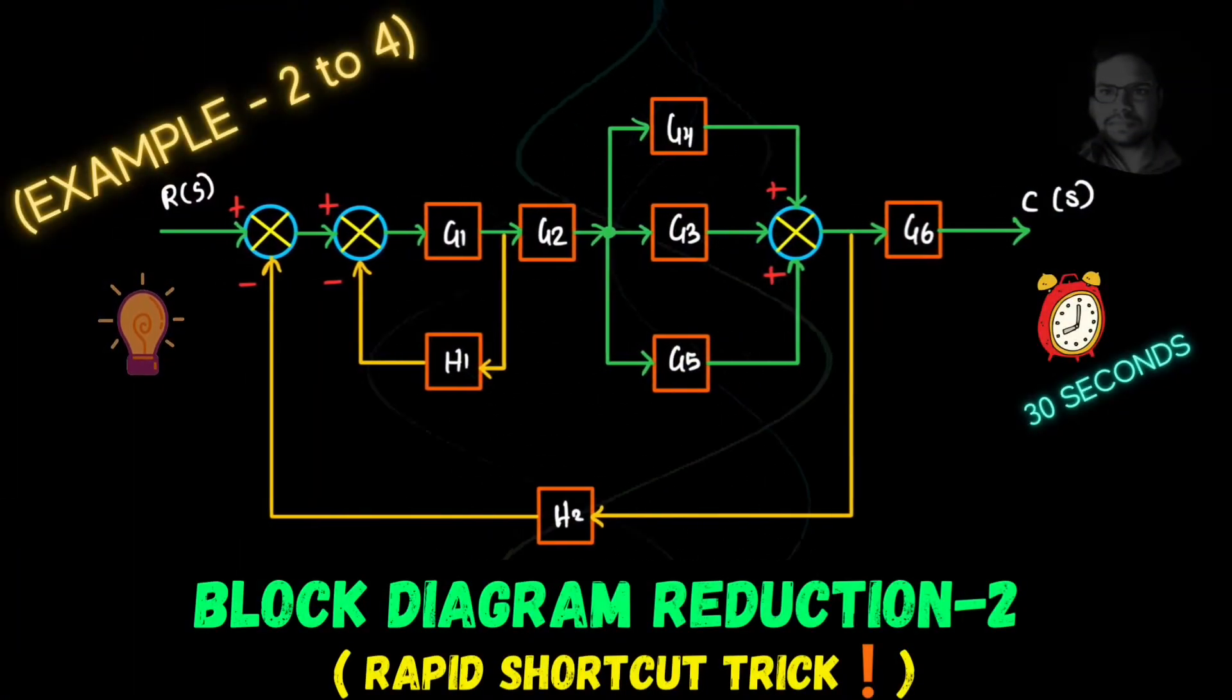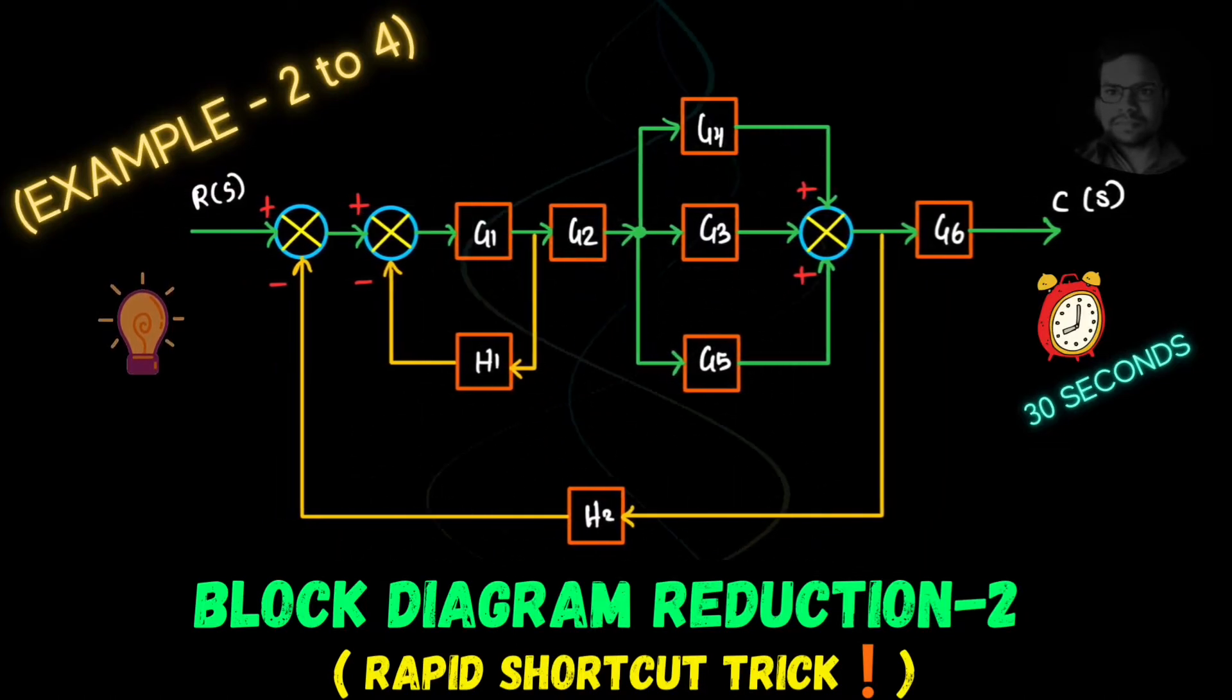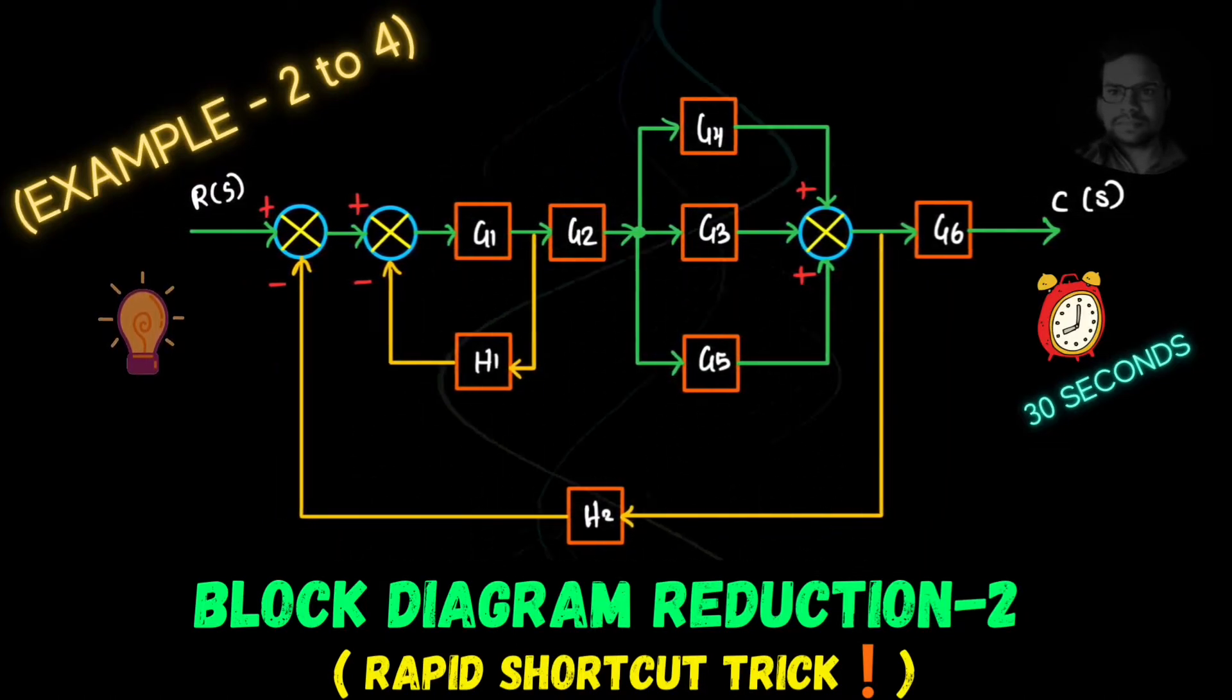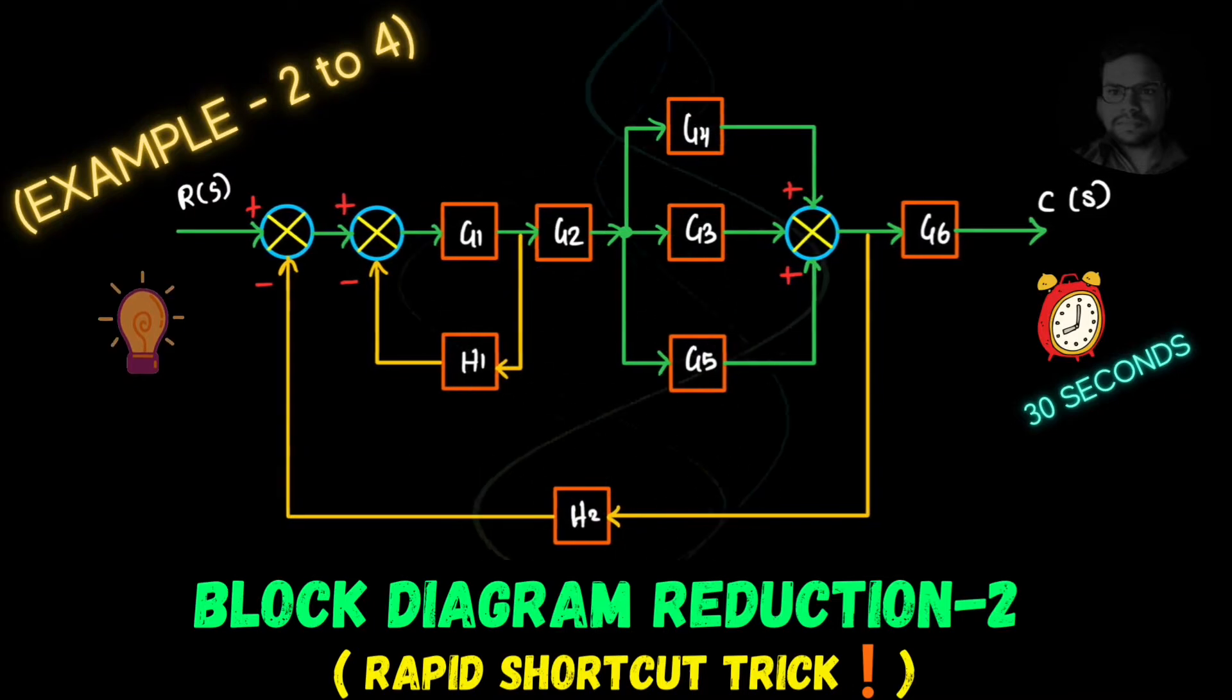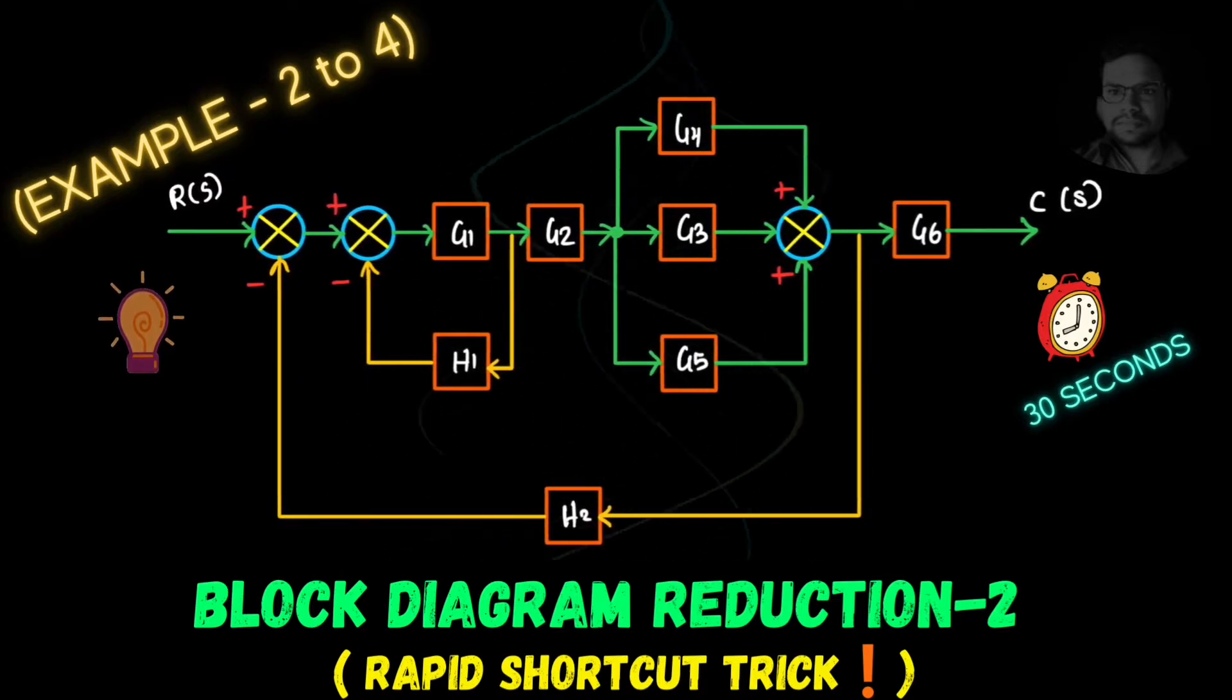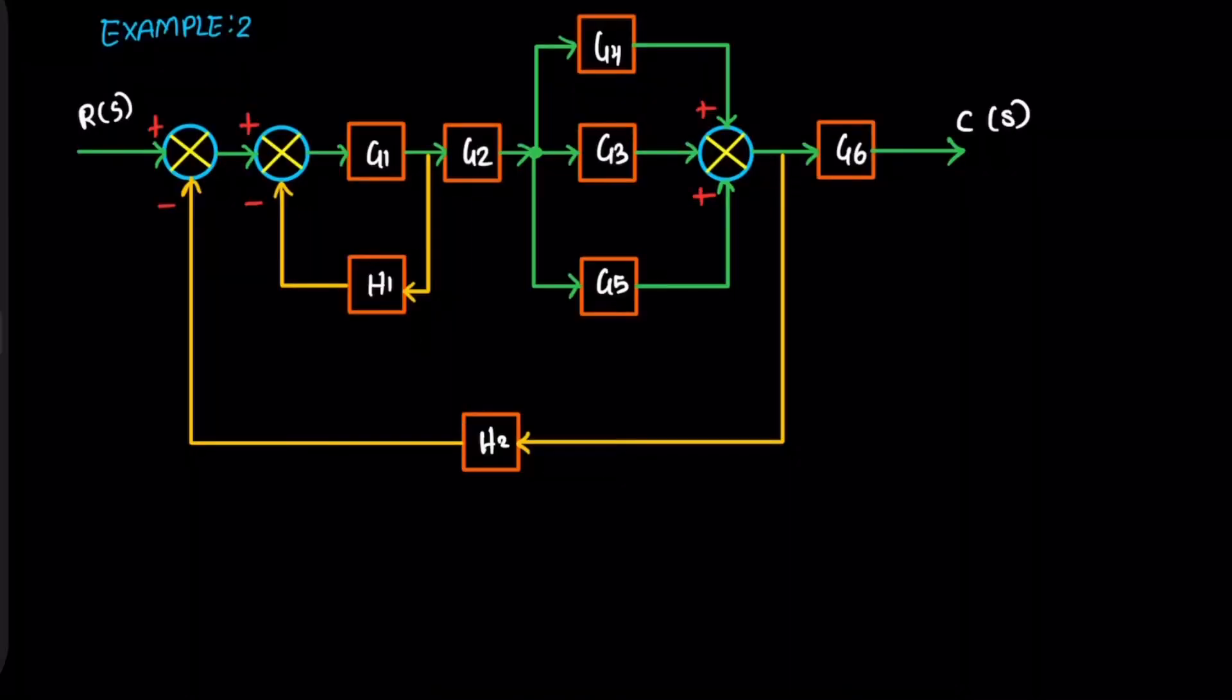Hello students, a very warm welcome to you all. Today we're going to discuss block diagram reduction examples 2 to 4. The transfer function T(s) is equal to C(s) divided by R(s).